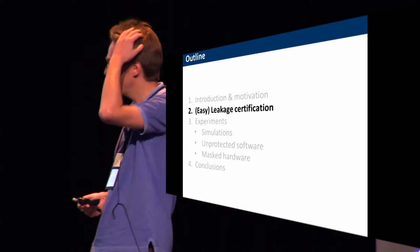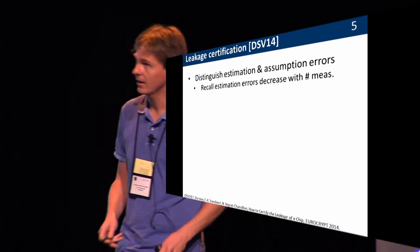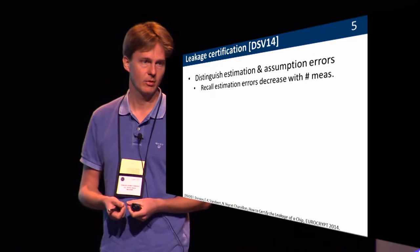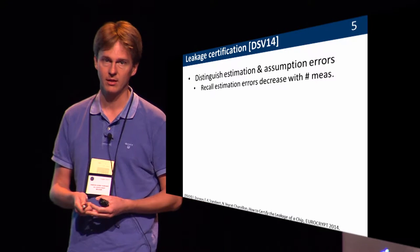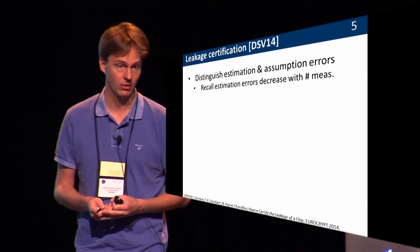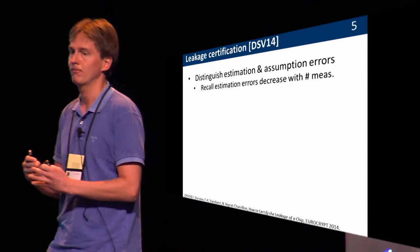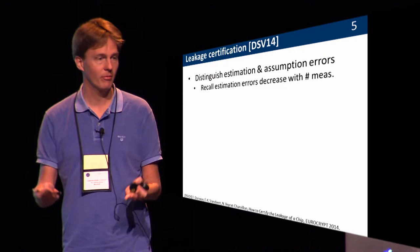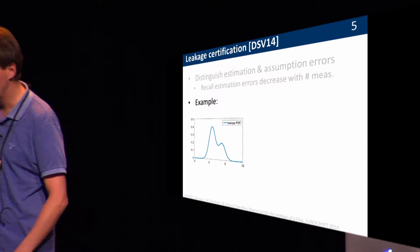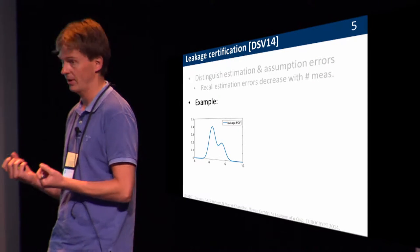That was essentially the problem we tried to solve with this certification paper. The key idea is: if we want to say something about this issue, we need to distinguish two types of errors in the model. One is estimation errors — you just don't have enough measurements. The other is assumption errors — you assume your distribution is Gaussian, and it's not. Estimation errors are a relatively kind type of error, because they always decrease if you measure more.